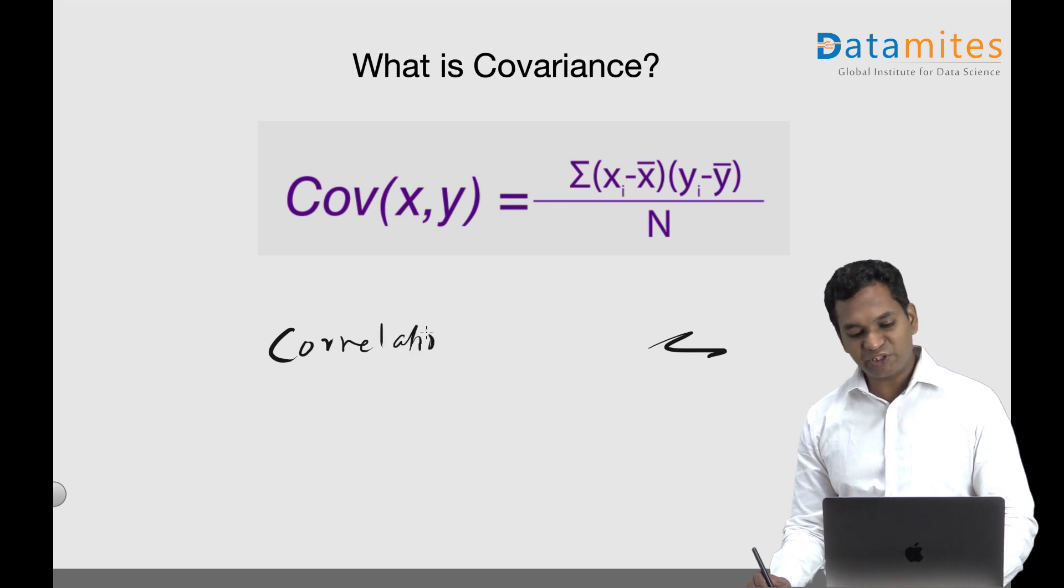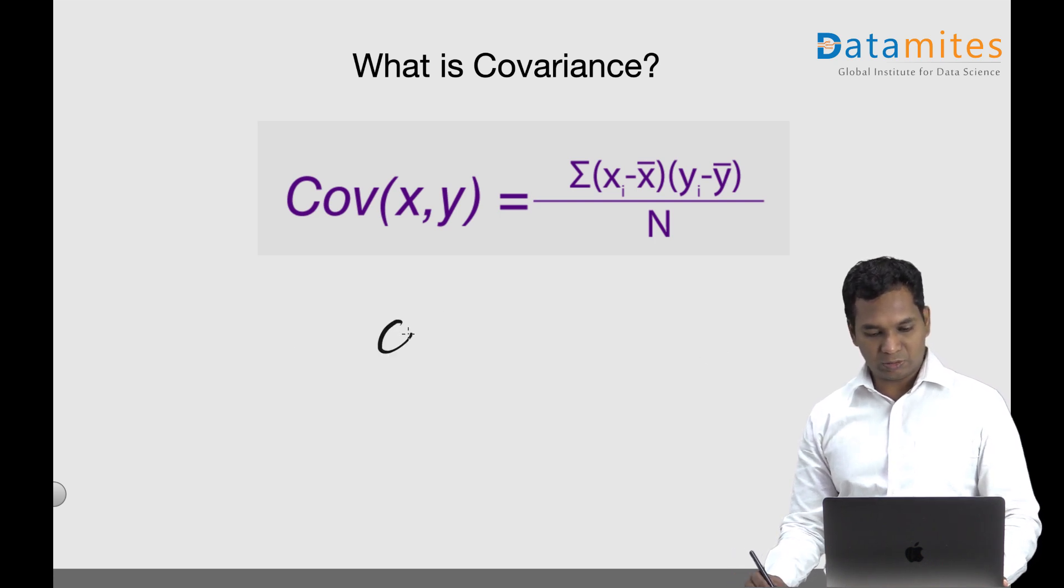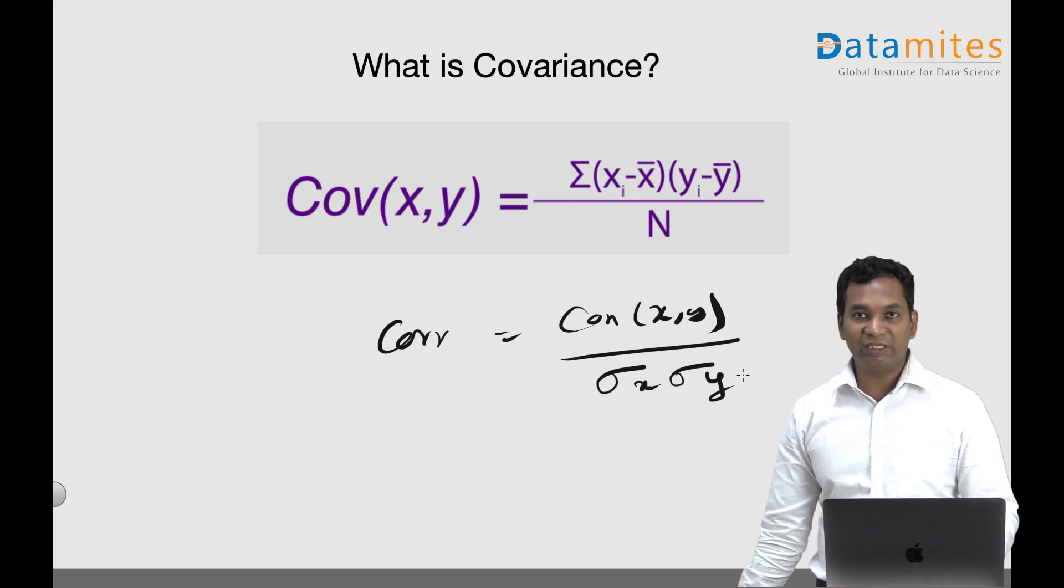Correlation between two variables - Pearson's correlation coefficient is actually covariance of x and y divided by the product of the corresponding standard deviations.